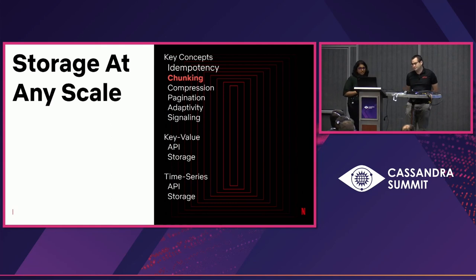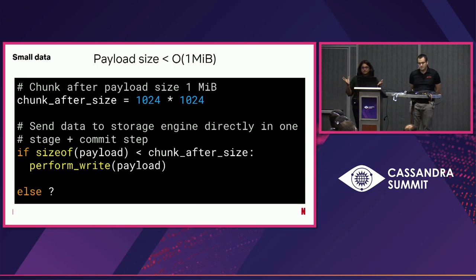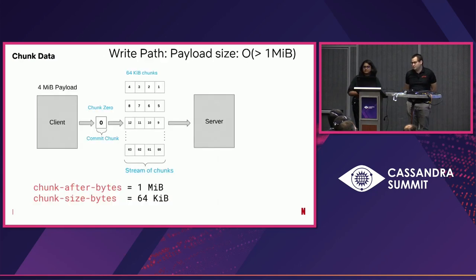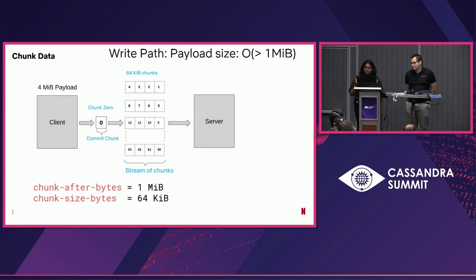The next concept is chunking. When we have a small payload — like 1 MB of data — we don't have to do anything; just write it to the database. But for large payloads like 30, 40, or 100 MB, we need to chunk. During the write path, we take the payload, chunk it into 64-kilobyte chunks, and stage it to the server — we don't commit it yet. After writing all the chunks, we take chunk zero, create it with all the information needed to perform the commit, and then commit chunk zero. Chunk zero validates your commit.